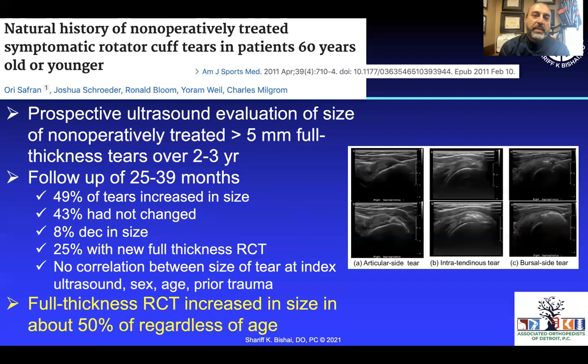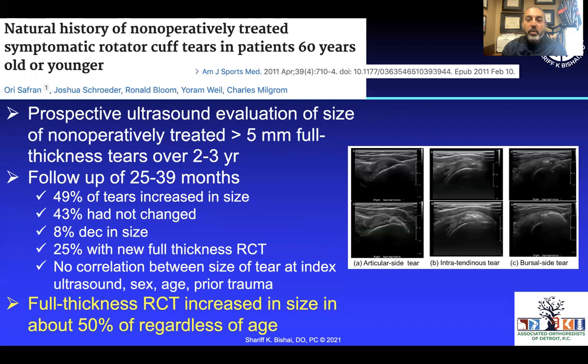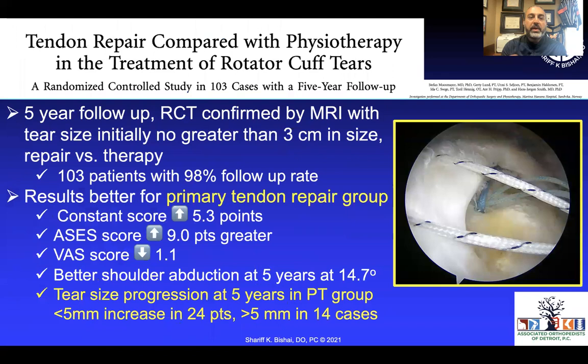If you have an opportunity to fix these tears, do it — they will get bigger, and constant scores continue to drop with every 10 mm of progression. In a prospective study of non-operatively treated patients aged 60 or younger, using ultrasound findings on less-than-5 mm full-thickness tears, 49% increased in size over three years, 43% stayed the same, and 8% appeared to decrease. Additionally, 25% developed a new full-thickness component. Full-thickness rotator cuff tears increased in size about 50% regardless of age.